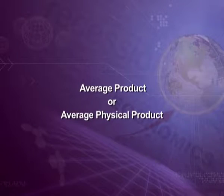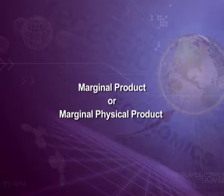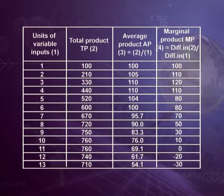Second term is average product or average physical product — the total product per unit of variable factor. Average product, like total product, initially rises, reaches its maximum, then declines, but both total product and average product remain positive because they can never be negative. Third term is marginal product or marginal physical product — change in total product per unit change in quantity of variable factor. It also rises initially, reaches its maximum, then starts to decline and becomes negative.